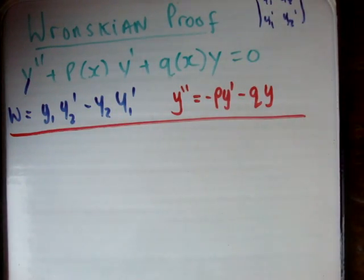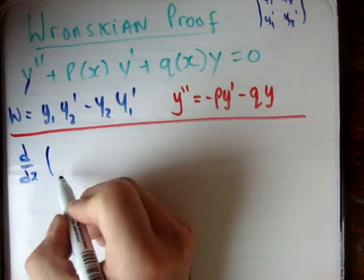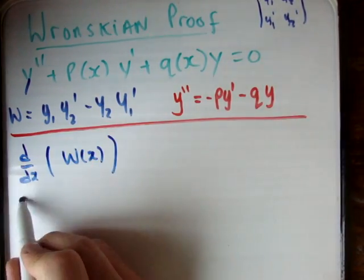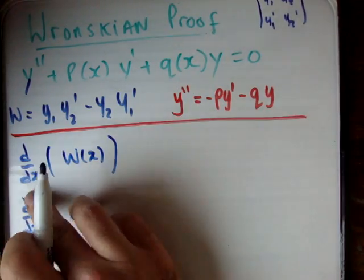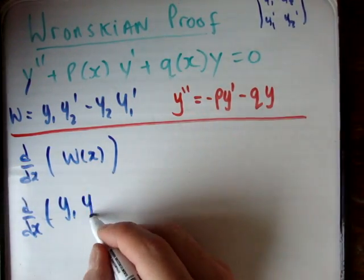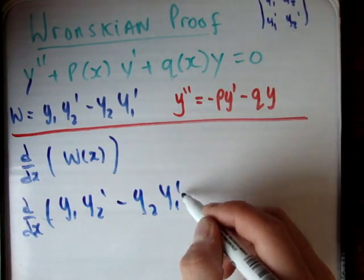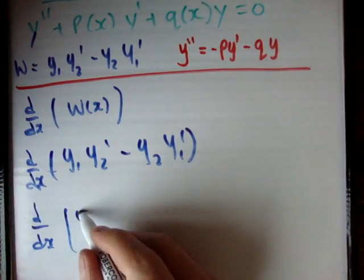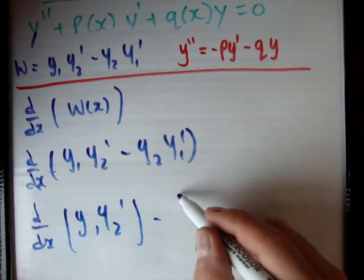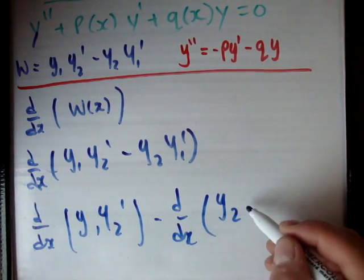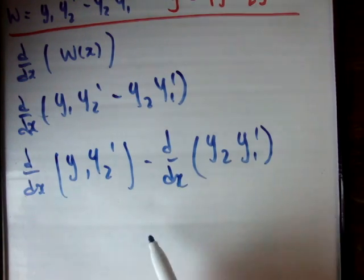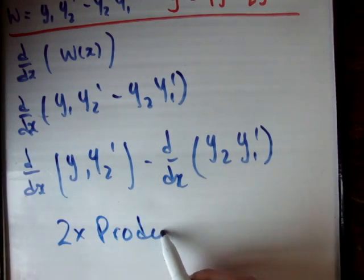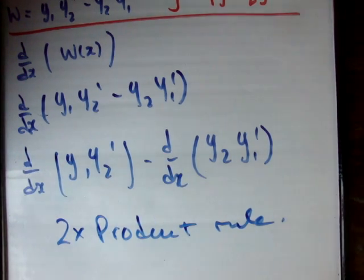Next we need to get the first derivative of the Wronskian, so d/dx of w(x). That's going to be d/dx of y1·y2 prime minus y2·y1 prime. This is actually very straightforward because we know that differentials are commutative, so we'll get two terms by the product rule.